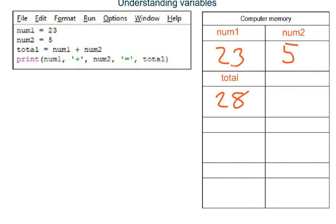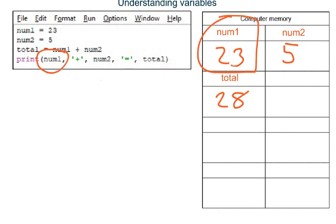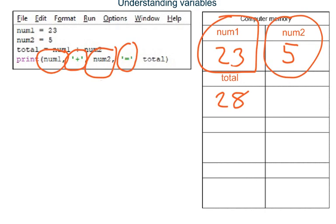The last line outputs five things: the integer stored in variable num1, followed by the plus sign (a string), followed by the integer stored in variable num2, followed by the equal sign (another string), followed by the integer stored in variable total.